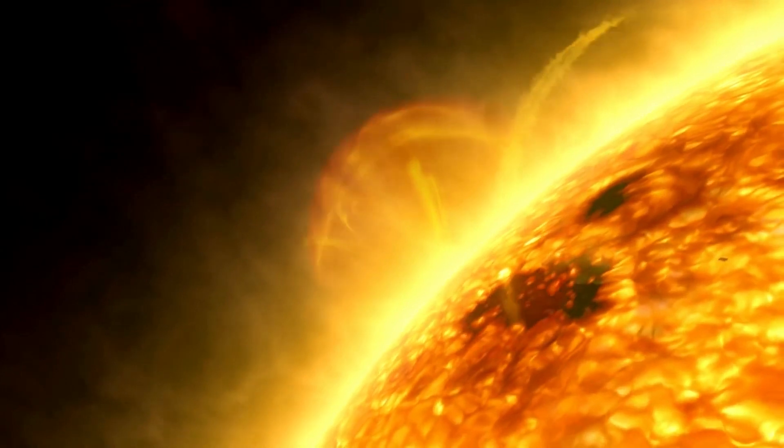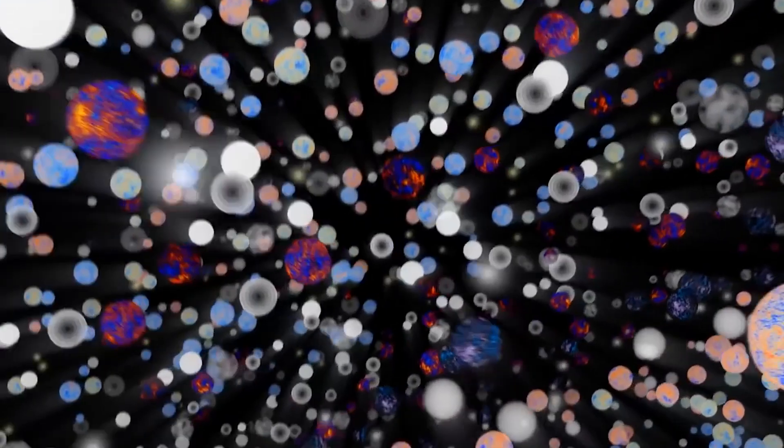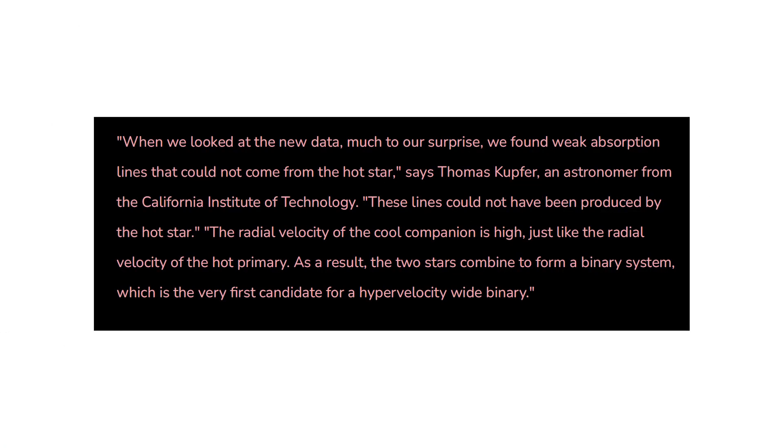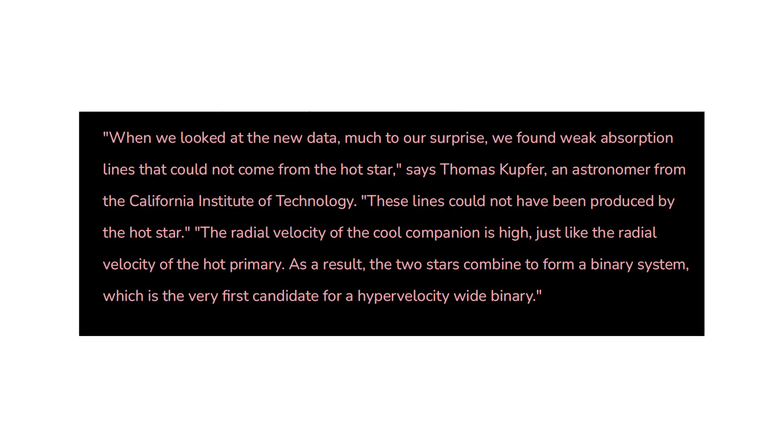It appears to be composed of one super-hot star that is more than five times hotter than our sun, as well as a companion that is 1,000 degrees cooler than our sun. When we looked at the new data, much to our surprise, we found weak absorption lines that could not come from the hot star.